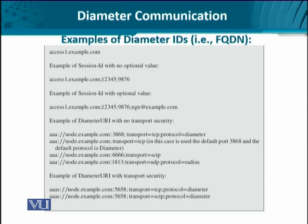We also have transport security implemented and not implemented, with different options available. The first option at the top — no security — is when the protocol being used is simply TCP at the transport layer and Diameter at the application layer. When the transport is implementing security, the famous TLS transport layer security is provided on top of TCP, and DTLS is provided on top of SCTP.